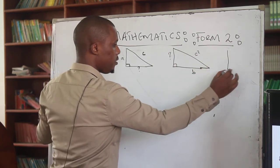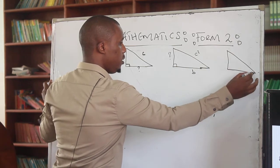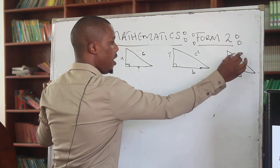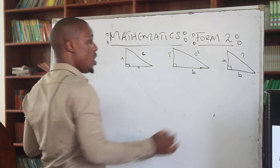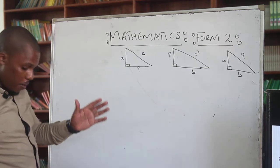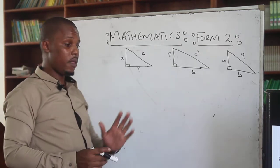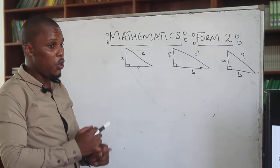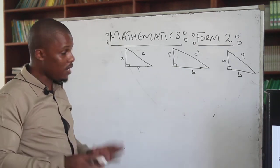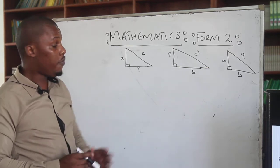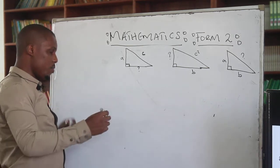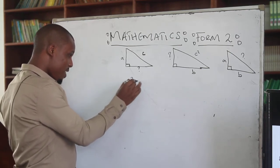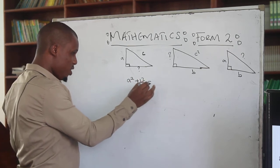One key point I am confirming is that for you to apply this theorem, you have to make sure that the triangle you are putting into consideration is a right-angled triangle. That is the first point you need to note. Then from there, you state the Pythagoras theorem, which is: A squared plus B squared is equal to C squared.